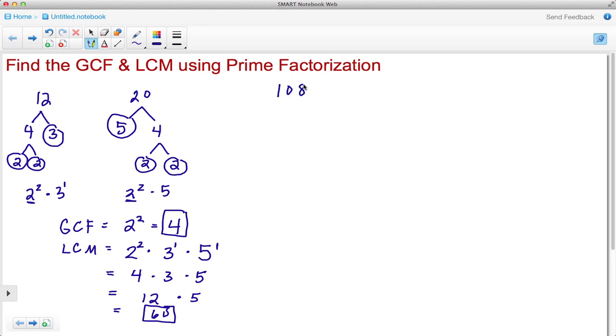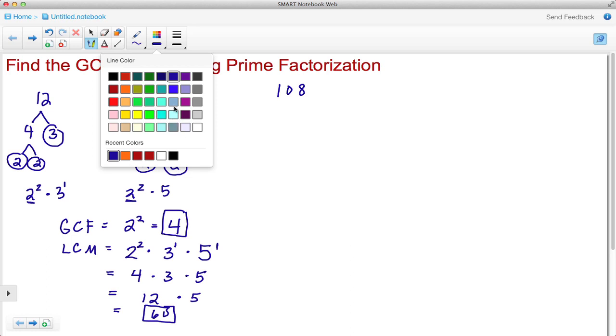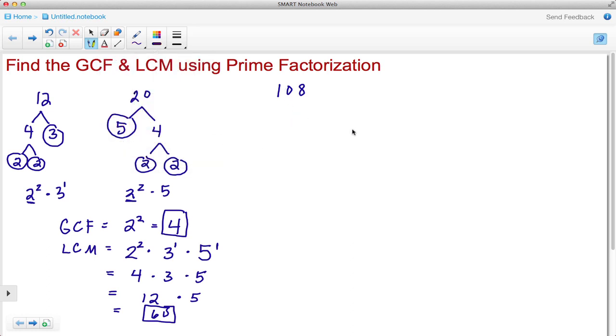Let's say we're using the numbers 108 and 64. For 108, I know that can be divided by 2 because it's an even number. Half of 100 is 50 and then half of 8 is 4, so I've got 50 plus 4 to give me 54. I know 2 is prime, so I'm gonna circle that.